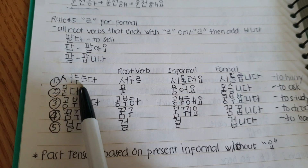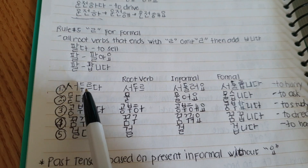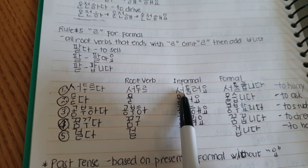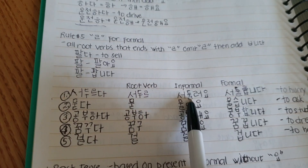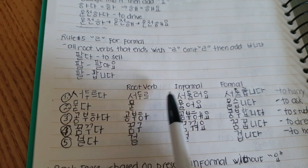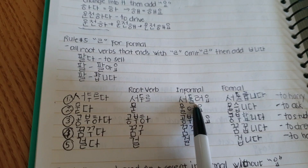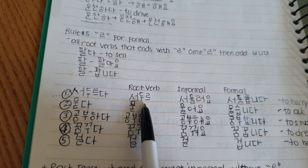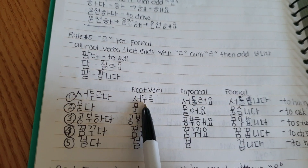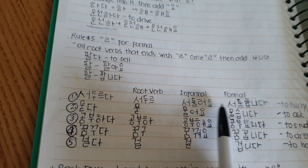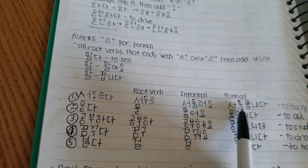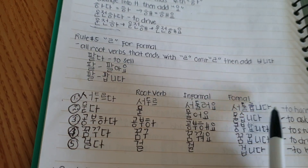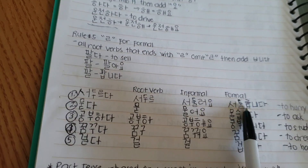Next example: 'sodurtta', meaning 'to hurry'. The root verb ends with 'u', so we add 'real', then remove it, then add 'uyo' — giving us 'sodulloyo'. For the formal form, you go back to the root verb, add 'real', remove it, then add 'psimnida' since it ends with a vowel. So 'sodullumnida' means 'to hurry'.